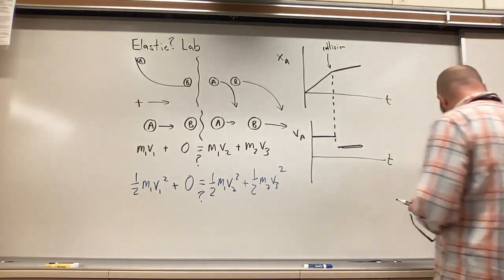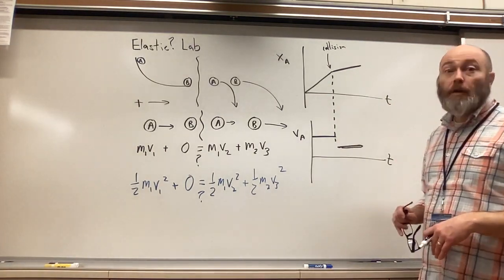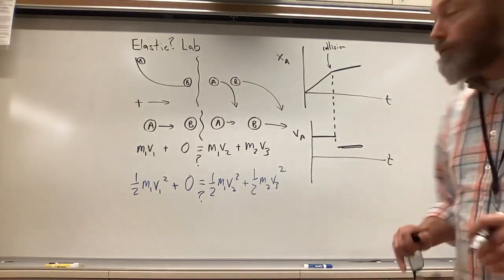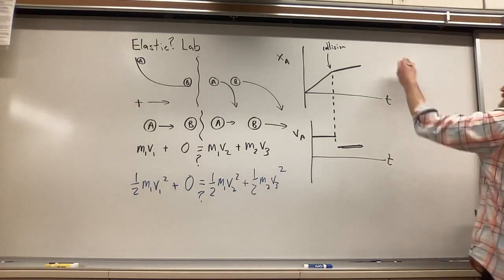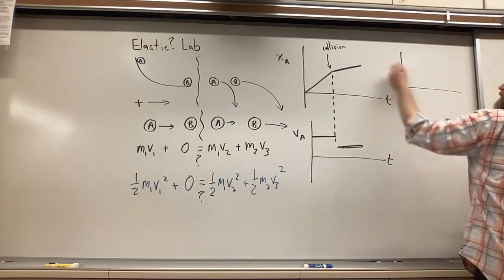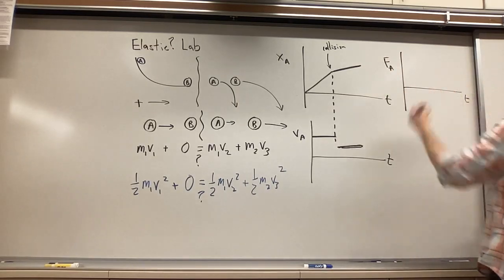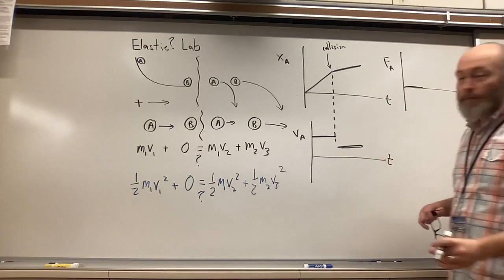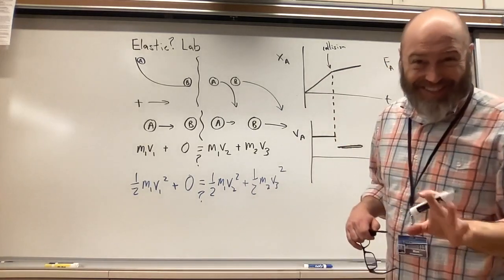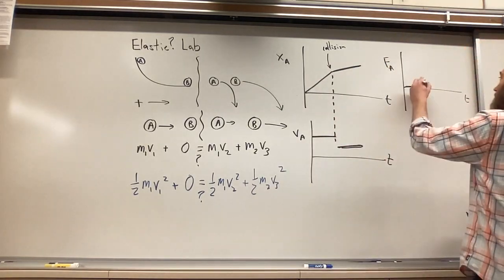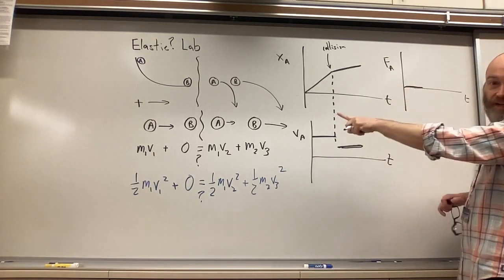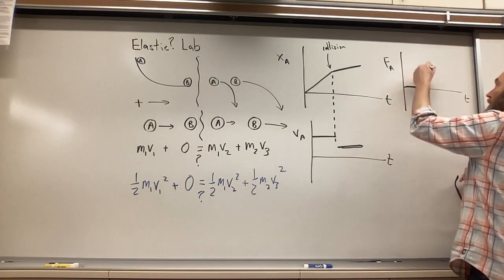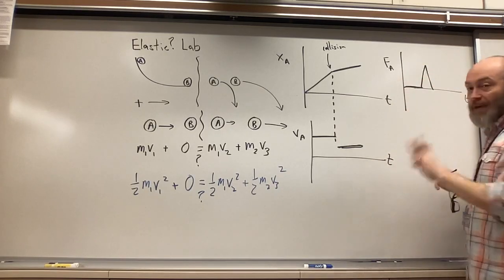There was also a question asking for the force on marble A and the force on marble B. For the force on marble A versus time: at the start there's no force. The collision time is almost instantaneous in reality, but we're spreading the time axis out so we can see it, so it would look like a blip or a brief pulse.